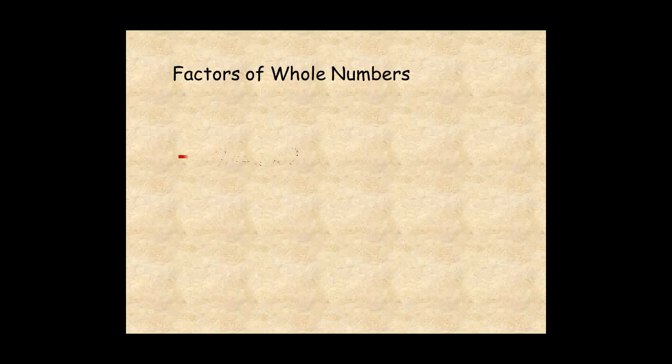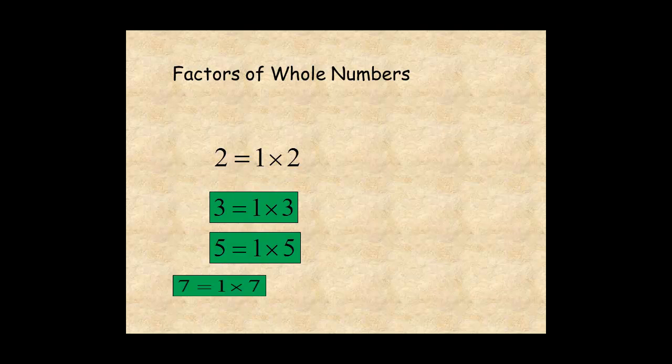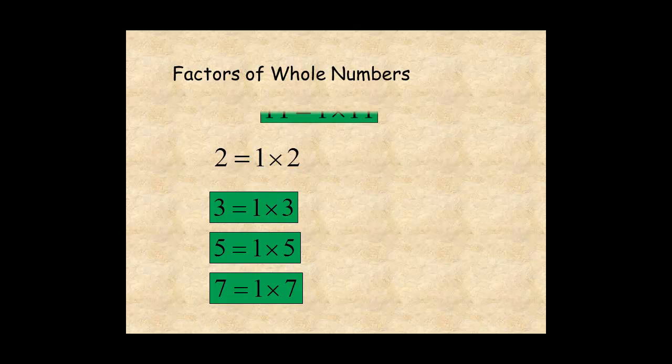2 is the smallest prime number. The next 5 prime numbers are 3, 5, 7, 11, and 13.